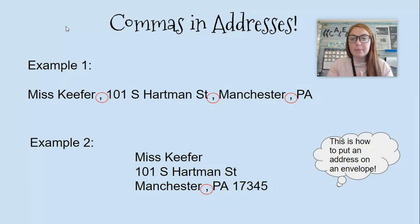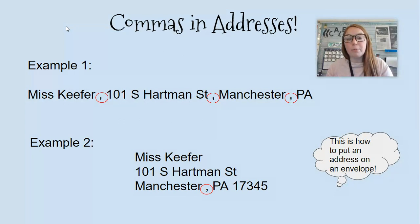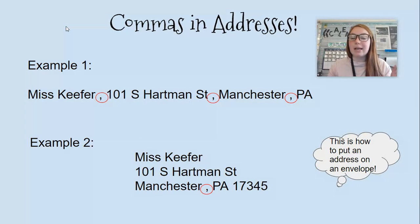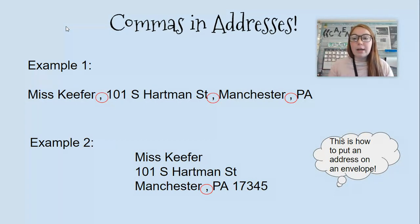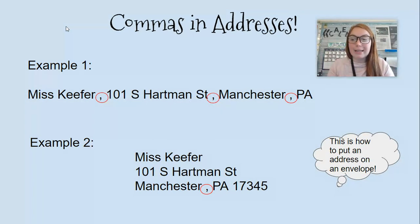The first part is the person's name, the second part is the street address, the third part is the city, and the fourth part is the state. That's why you have those commas there — to separate it because it's all in one long line. But the second way to write an address is how you put it on an envelope.